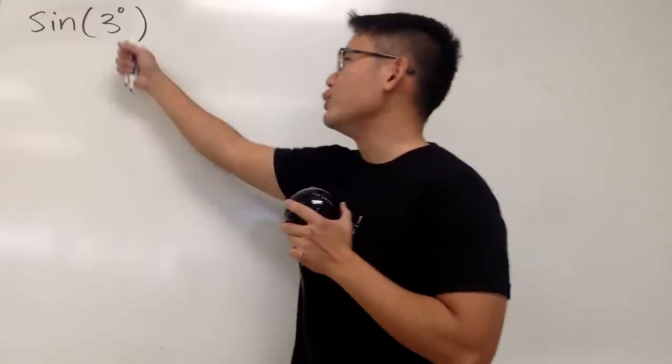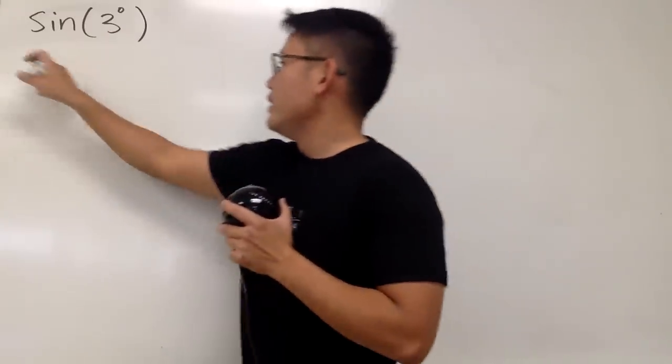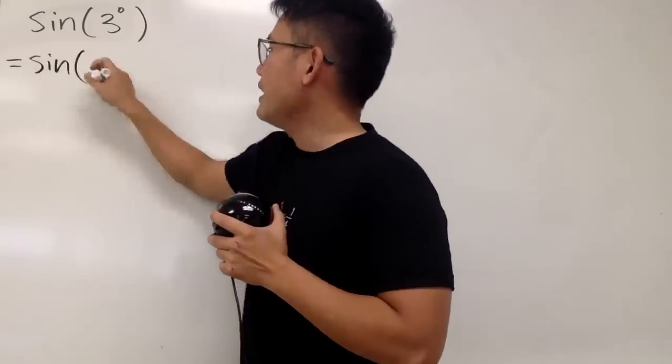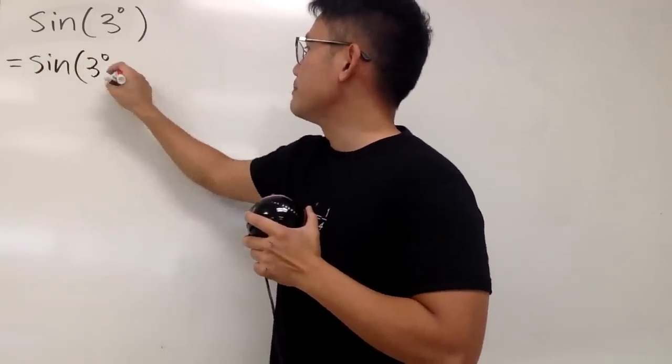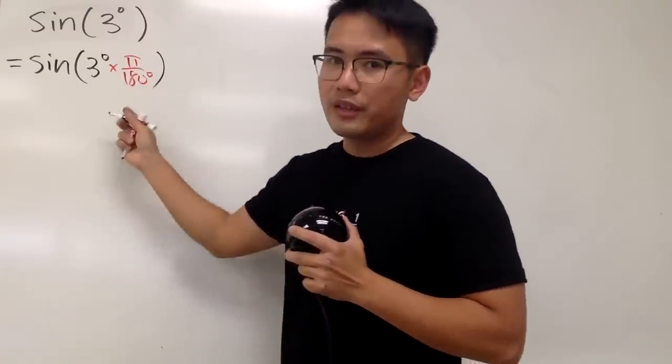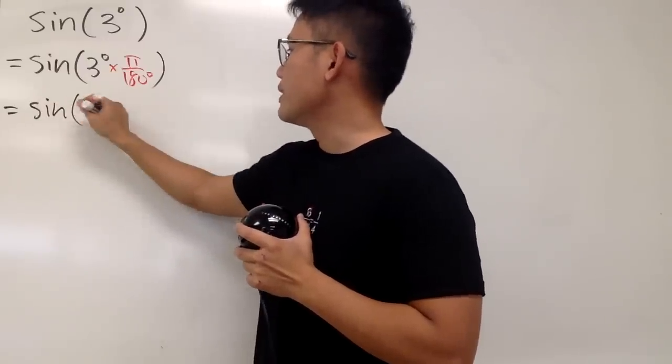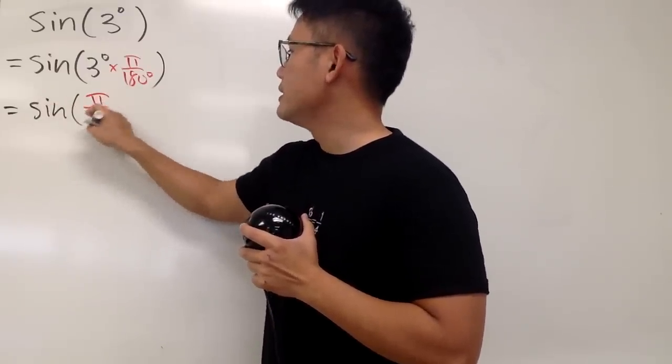First of all, we cannot use degrees because we are all adults now, so we have to use radians. Therefore, we are going to look at this as sine, and look at the 3 degrees, and we multiply this by pi over 180 degrees. And of course, we can just work out the inside, and this is going to give us sine of pi over 60.